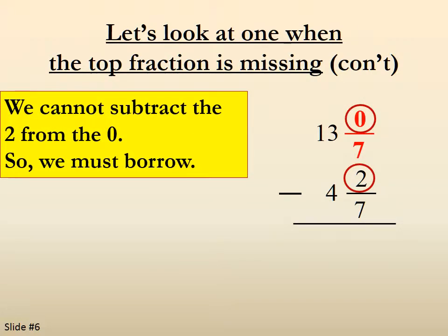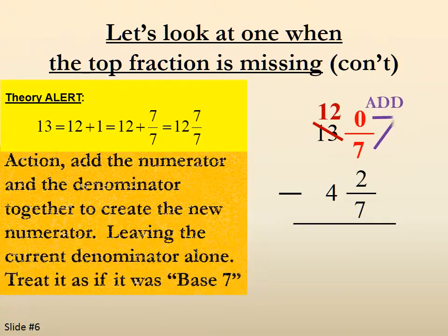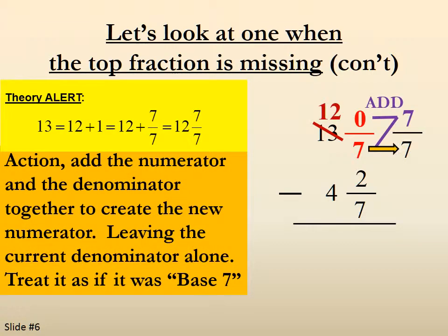So we have to borrow. Borrow from the 13, which makes it 12. We add the 7 to the 0, which makes 7 for the new numerator. Again, we're adding the denominator because we want to treat our denominator as if it was our base.